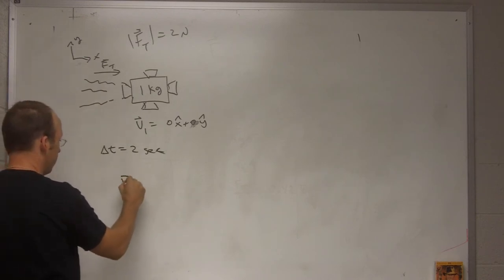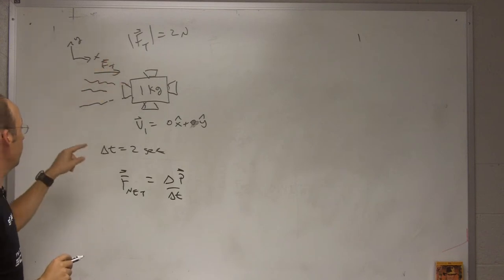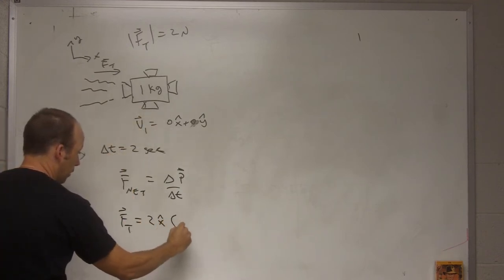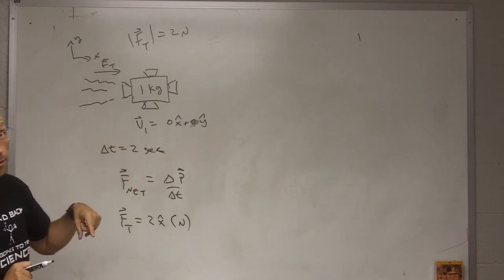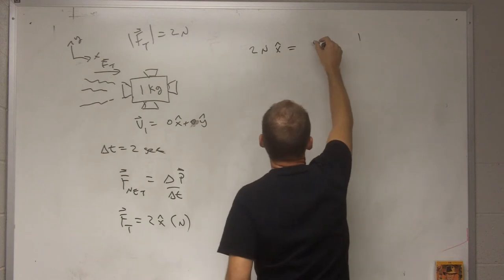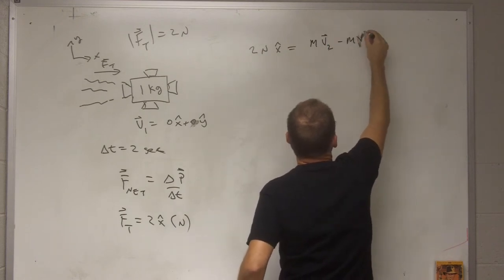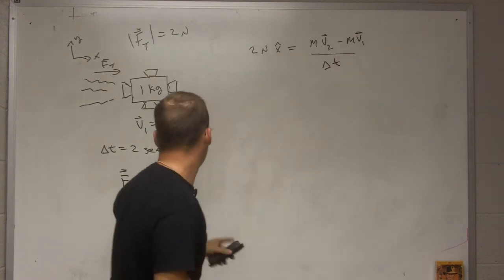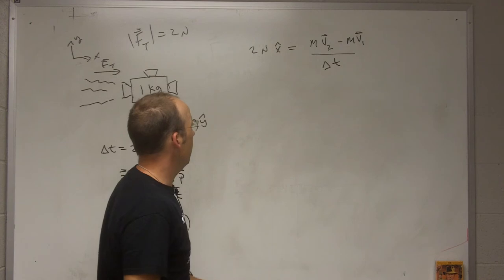The momentum principle says this: F net is the change in momentum over the change in time. I know F net in this case is going to be just the thrust, which is going to be, it's pushing that way, so 2 x hat Newtons. You really need units. And the change in momentum, I know the initial momentum and I want to find the final momentum.